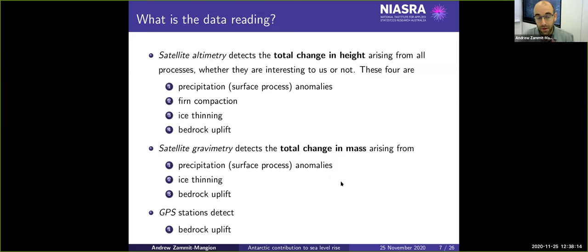The problem in a nutshell is that this is a very ill-posed problem. So for example satellite altimetry detects height change but we don't know whether that is due to precipitation, due to compaction of the ice, due to basal melting of the ice, due to bedrock uplift. The same problem when you detect a change in mass. We don't really know what contributes to an observation.